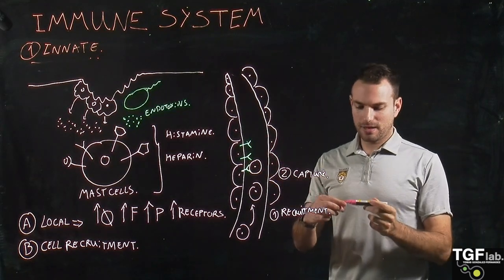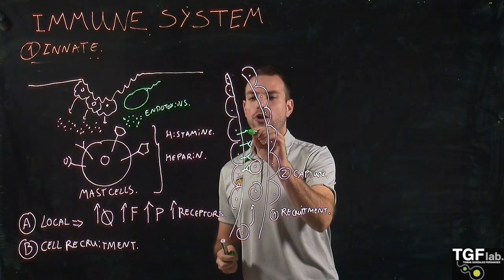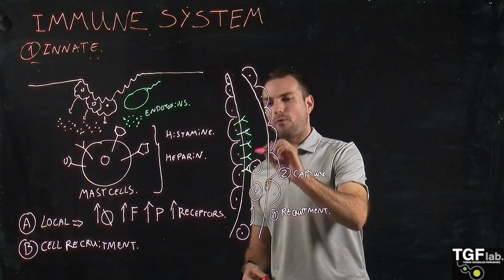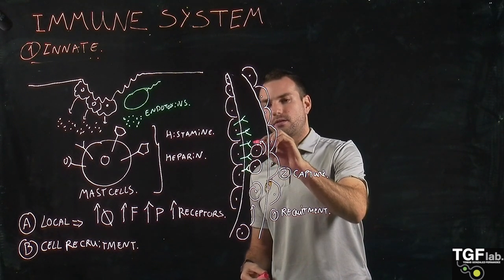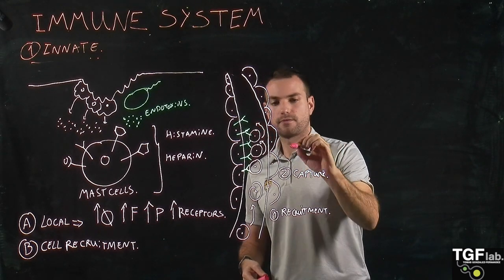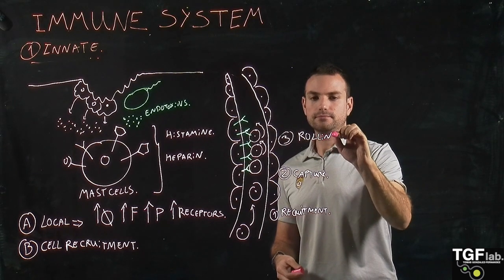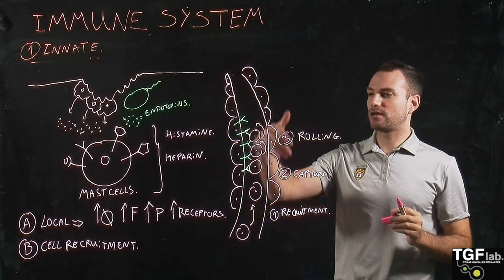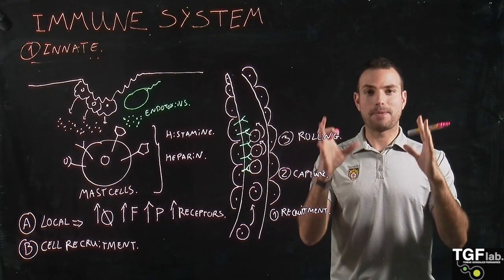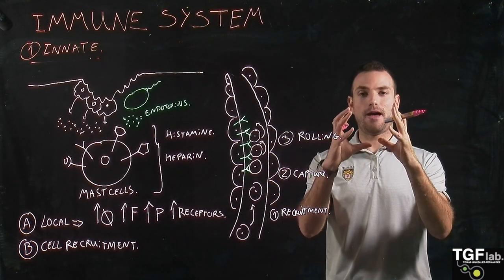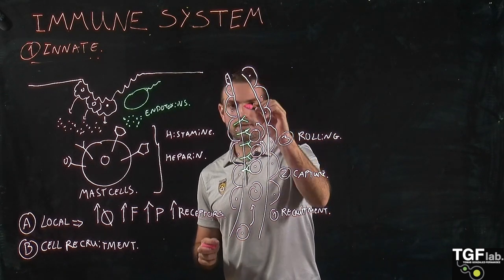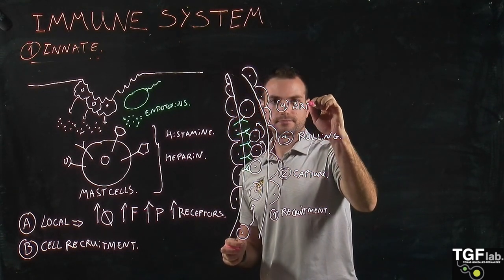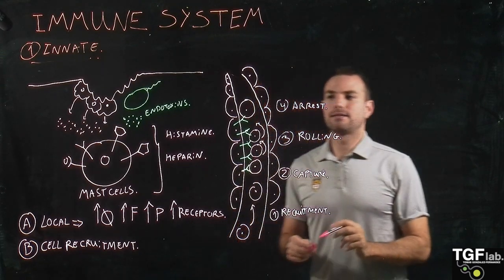Once they are captured through interaction with the receptors, they start the process of rolling. These neutrophils, once captured, roll over the wall of the blood vessel — they roll over the endothelium — until they become focused in one area. This is the arrest phase, and the neutrophils are arrested.